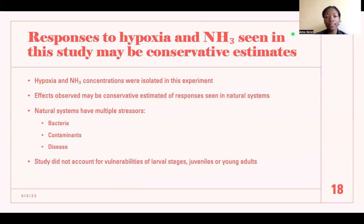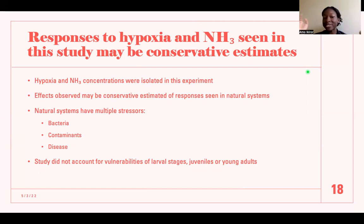Responses to hypoxia and ammonia seen in this study may be conservative estimates, which is very worrying. In this experiment, hypoxia and ammonia concentrations were isolated — no other stresses were present. So these effects are much lower than they would be when all stresses affect this organism, including bacteria, contaminants, and disease. Additionally, this study only observed adult Austrovenus and did not look at the possible vulnerabilities of non-adults: young adults, juveniles, or organisms in their larval stages.